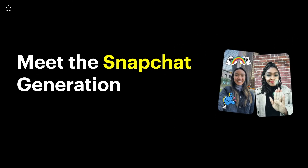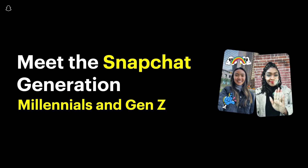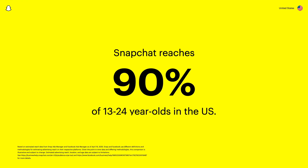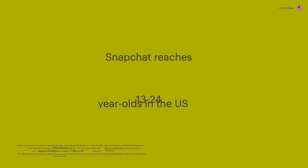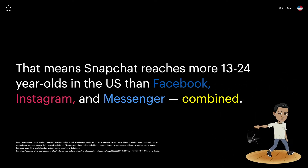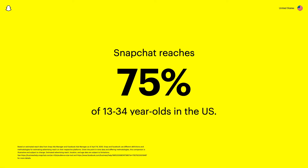First, let's double click on who the Snapchat generation is – Millennials and Gen Z. Snapchat reaches 90% of 13-24 year olds in the US. That means Snapchat reaches more 13-24 year olds in the US than Facebook, Instagram, and Messenger combined. Expanding to include Millennials, Snapchat reaches 75% of 13-34 year olds in the US.